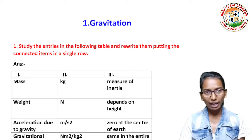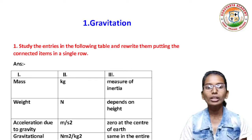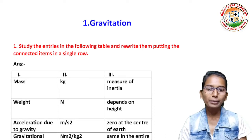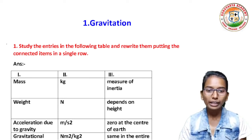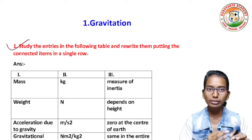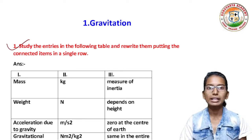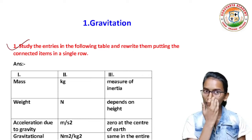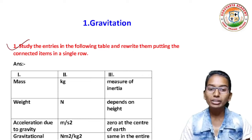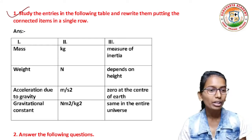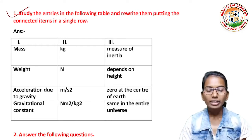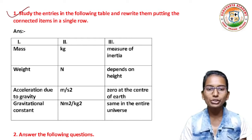That is the exercise we have, starting with question number 1. We have to match the entries in the following table, putting two connected atoms in a single row. First: mass — unit kilogram — third column: measure of inertia.